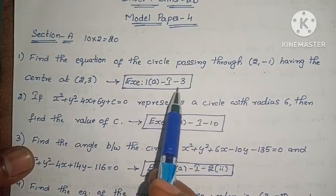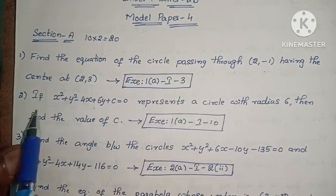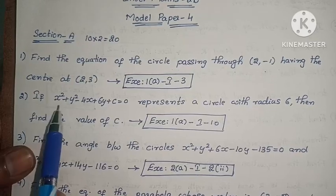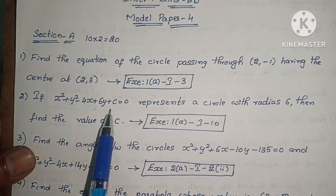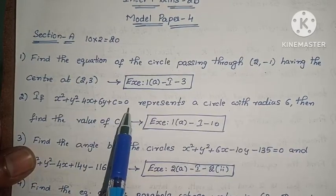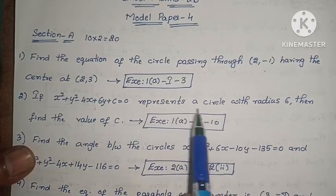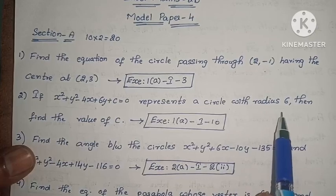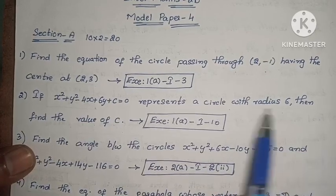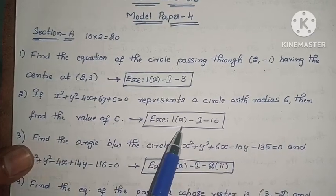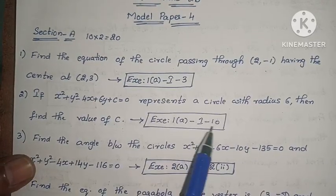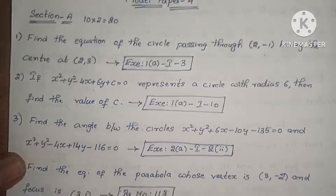This is question 1, first exercise, third problem. Next: if x² + y² - 4x + 6y + c = 0 represents a circle with radius x, then find the value of c. This is question 1, first exercise, third problem.